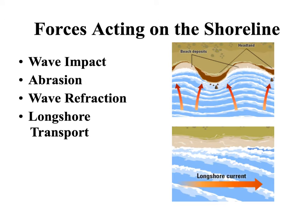Let's look at some forces that are acting on the shoreline. Perhaps the most common one is going to be wave impact, and that's just the waves hitting the shore. That constant hitting can cause some weathering, but also the waves moving up and down the shoreline can take away sediments, and that would be erosion. So we can see a lot of impacts of these waves hitting the shoreline and causing the shoreline to change.